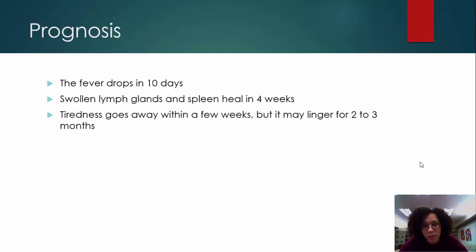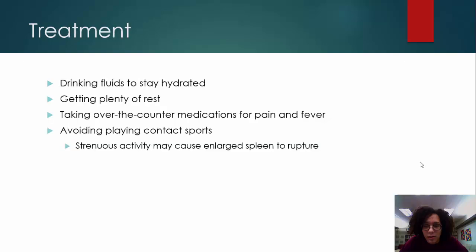The prognosis for mononucleosis is that the fever generally drops within about ten days. Swollen lymph glands and spleen heal in about four weeks. The tiredness may go away within a few weeks, but in some otherwise healthy patients the tiredness may linger for two to three months at most.